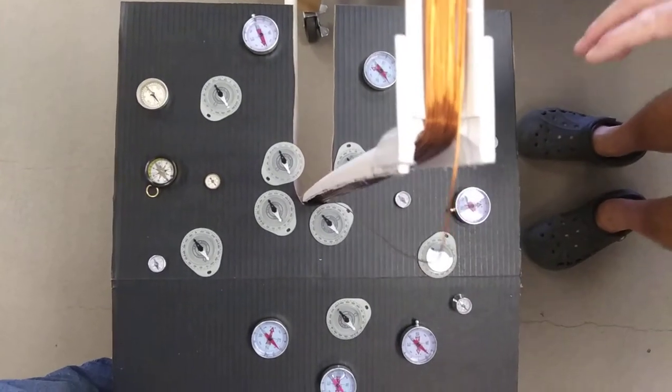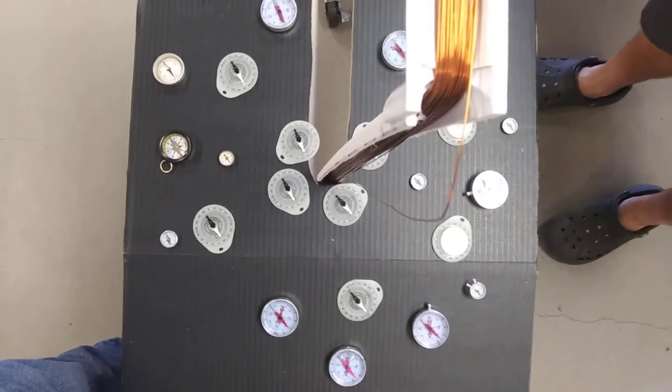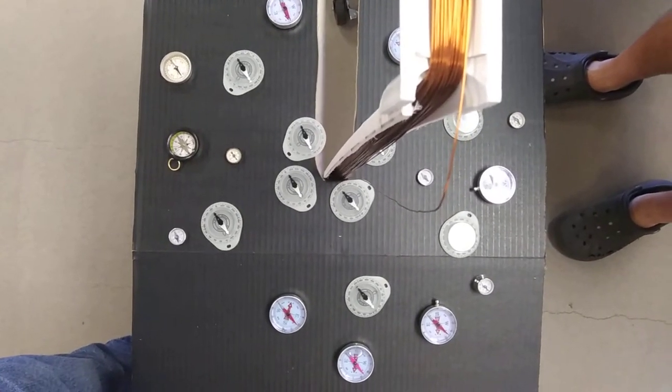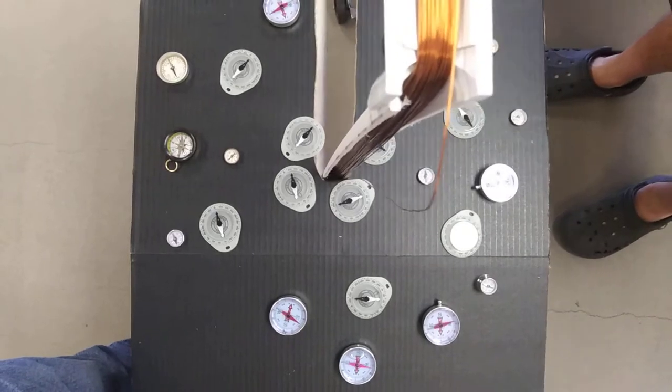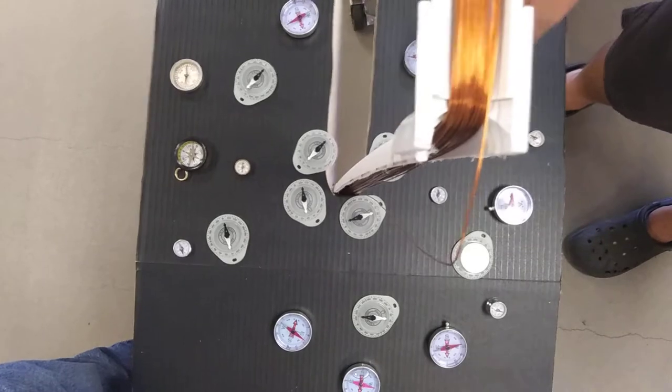But the idea is now I'm going to close the switch. All right, you ready, Angus? Yeah. And so we had 15 volts, we got 1.6 amps. Hopefully, you see some of the compasses changing.